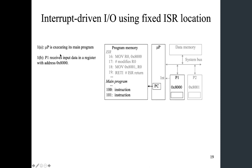The first step: the microprocessor is executing its main program, and P1 receives input data in the register with address 8000 in hexadecimal. So the data goes into this register. Based on the design of the peripheral, it interacts with certain physical systems, so there will be some information coming in. We say this is the data stored at address 8000 — this is the new data.